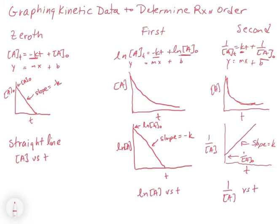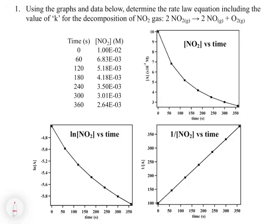We now have a straightforward method: take any kinetic data of A versus t, plot it as A versus t, ln(A) versus t, and 1/A versus t, then look for which gives a straight line. Whichever does tells us whether it's zeroth, first, or second order. In the example, we use graphs and data to determine the rate law for the decomposition of NO₂ gas. There are three plots, and only the 1 over NO₂ versus time plot is straight, telling us it's second order.